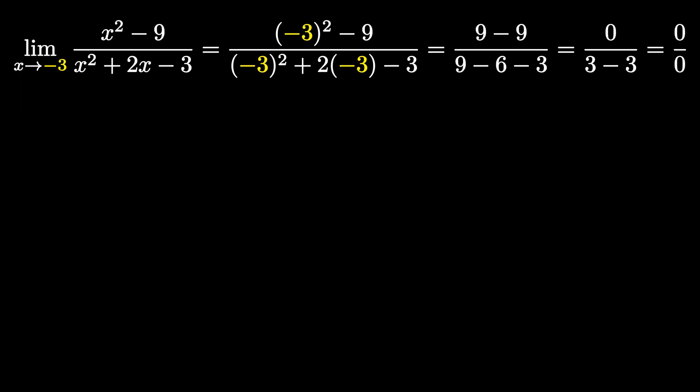So unfortunately, we can't leave this as 0 over 0. We can't say the limit is 0 over 0. No, that's unacceptable. We can't leave it in this form. So what we have to do is, to get it out of this form, we have to use some algebraic techniques to essentially identify the holes of our function, and we want to cancel out those holes because they're the reason that we are getting 0 over 0. And once we cancel out those holes, we want to re-evaluate our limit to see what the true value is.